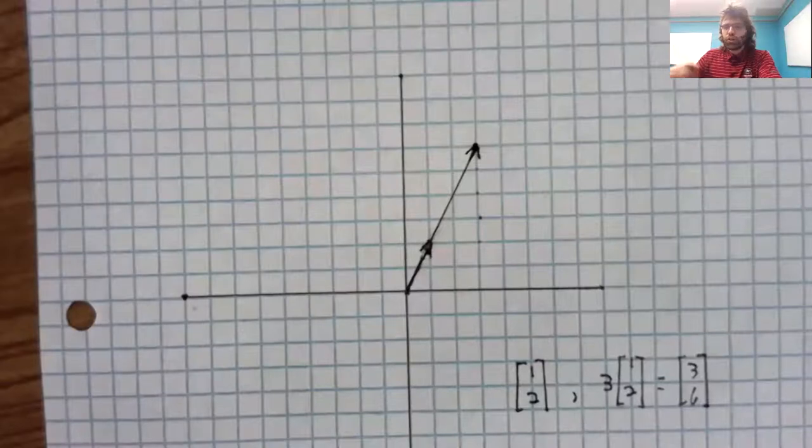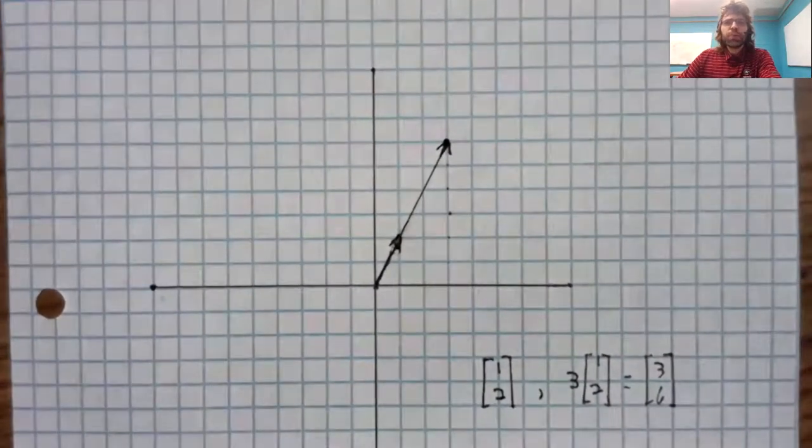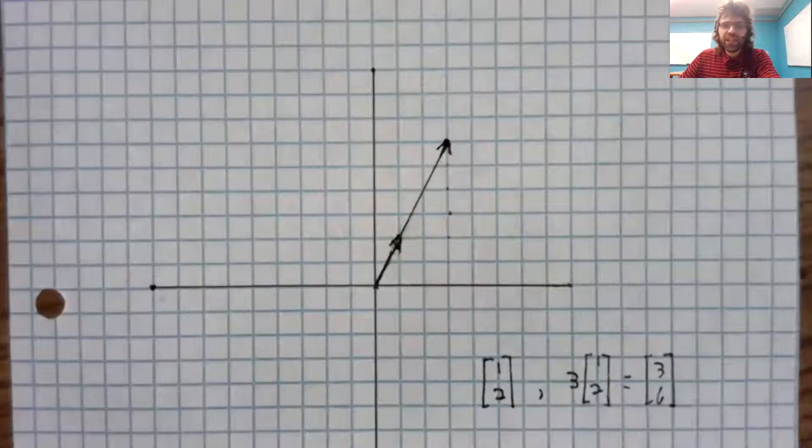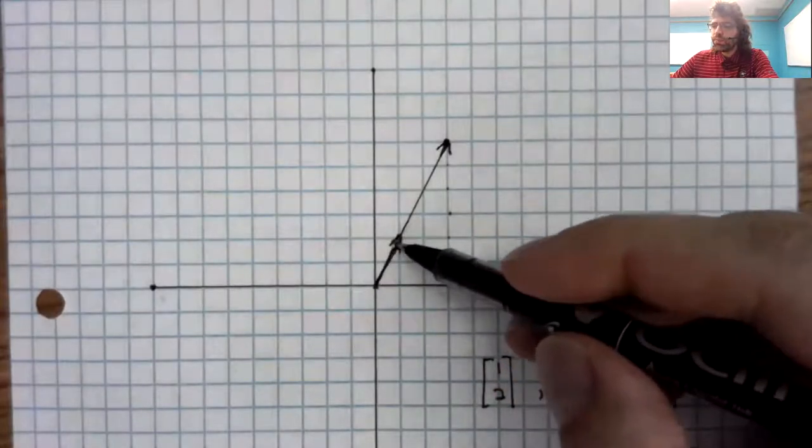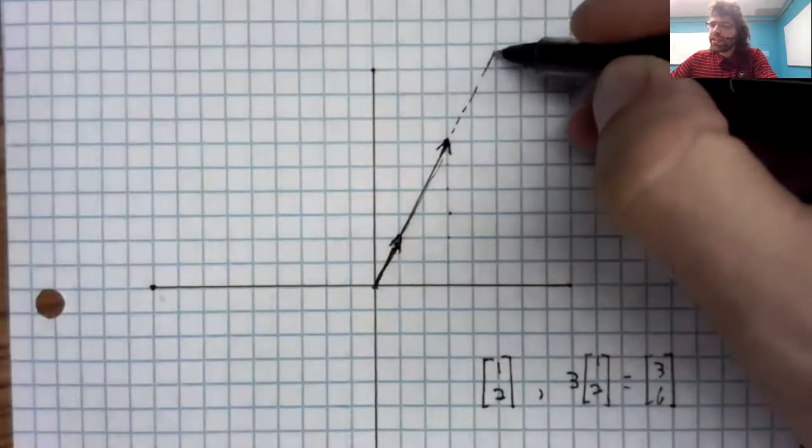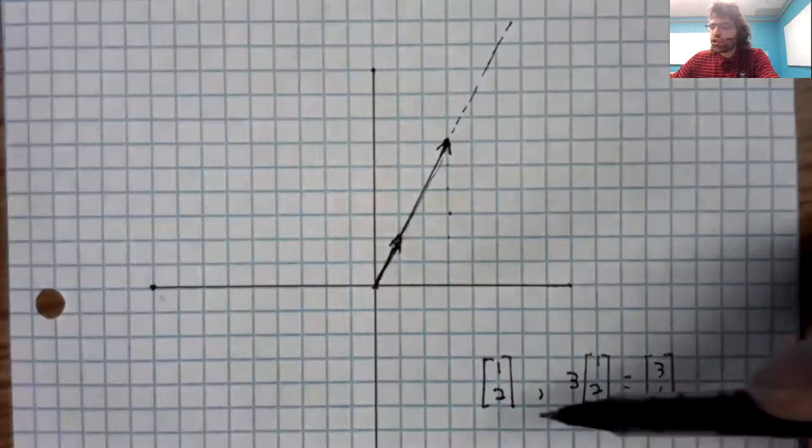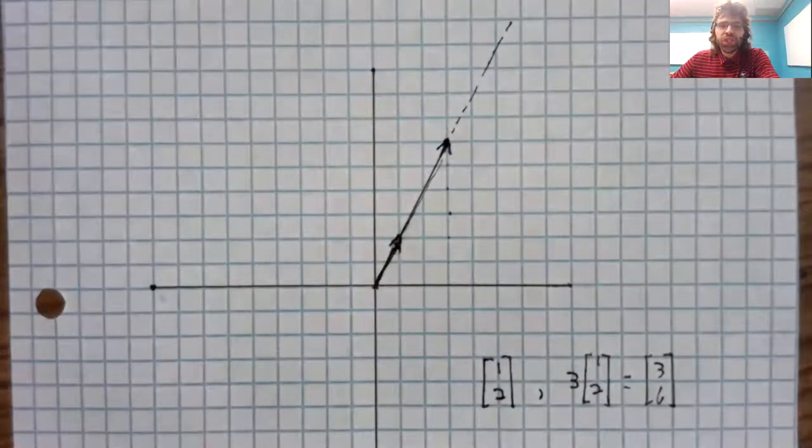So the vector [3,6] is this vector. And you remember when I said that every vector has a direction that it's just literally the direction that arrow is pointing in. Well, this vector [1,2] and this vector [3,6] are pointing in the same direction. So scalar multiplication did not change the direction of this vector.